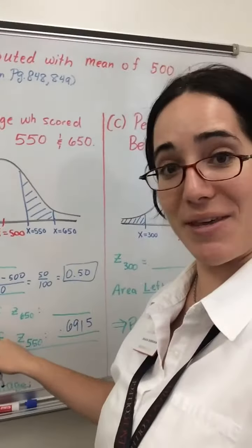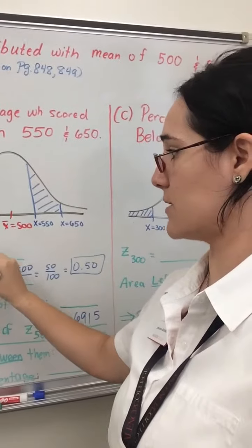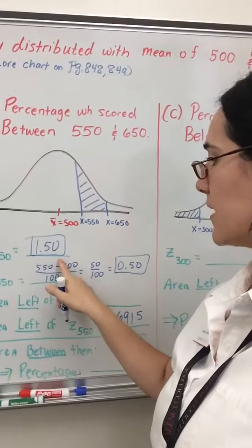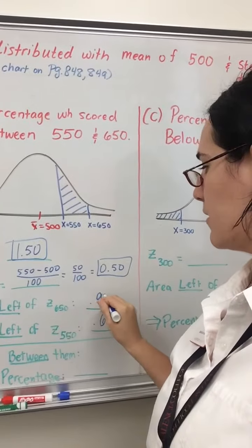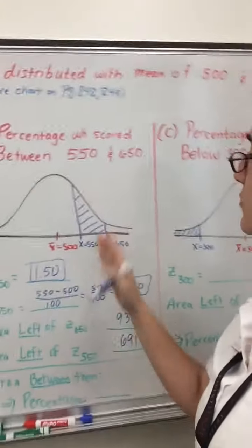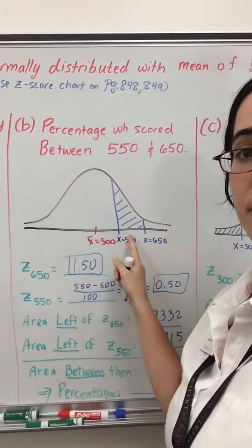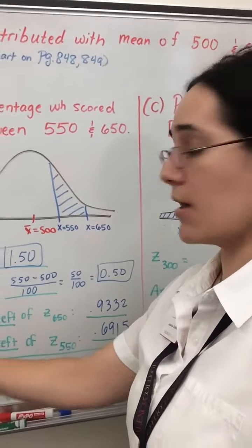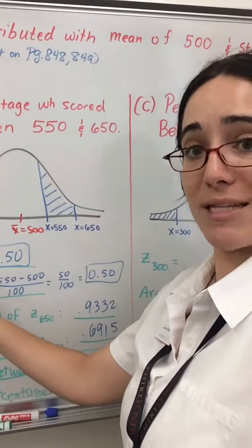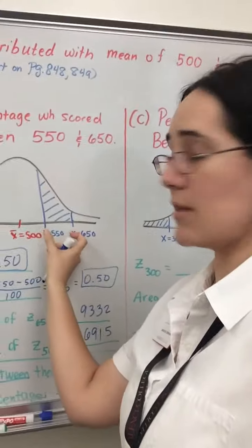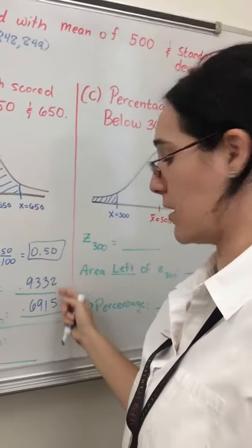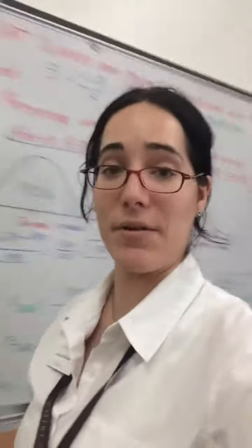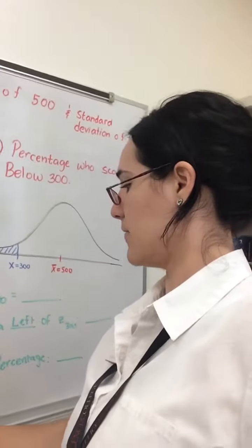We already looked up the area to the left of the z-score for 650, because that z-score was 1.50 in our Part A of the problem. So, if I use that area, which we already found to be .9332, what we're really interested in is this shaded region. We know that from 650 below, that's .9332, and from 550 below, that's .6915. So, the area between them can be found using the difference of these two areas. And when I do that, I get .2417, the area between them.